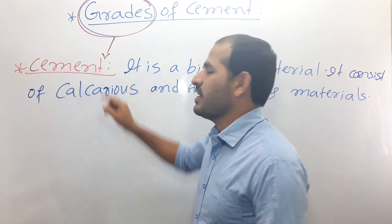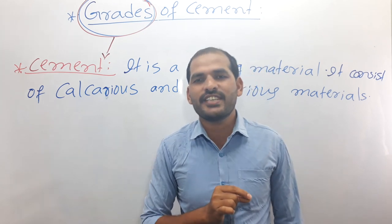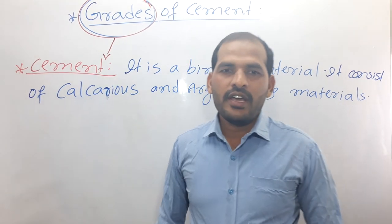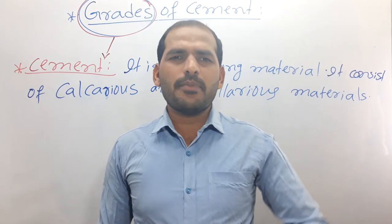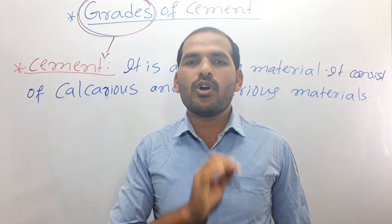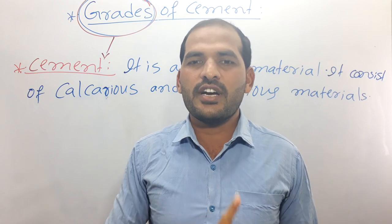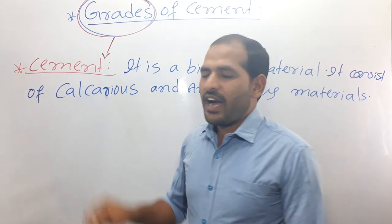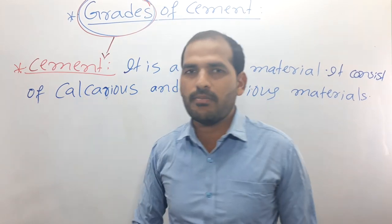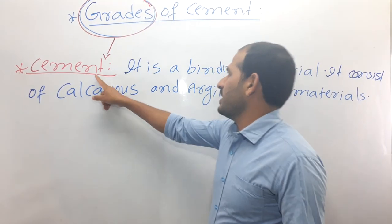Before the manufacturing process of cement was developed, lime was used as a binding material for all types of construction. In olden construction, everything was built using lime mortar. After 1824, Joseph Aspdin developed the manufacturing process of cement, and since then cement has been used as a binding material.